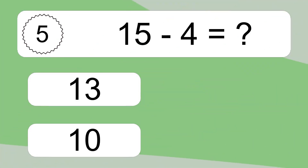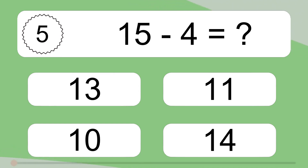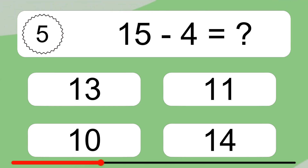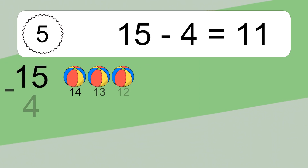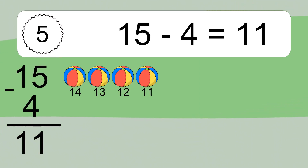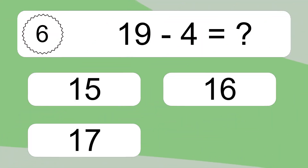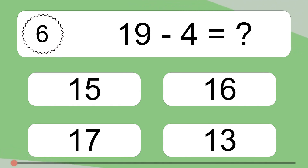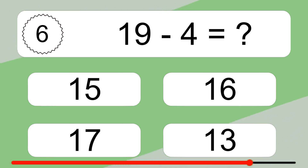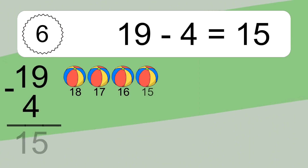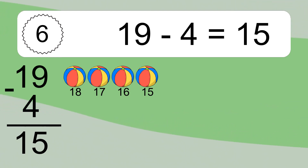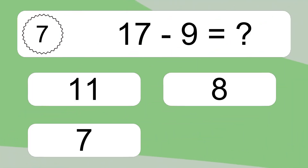15 minus 4 equals what? 19 minus 4 equals 15. Let's count it! 18, 17, 16, 15.